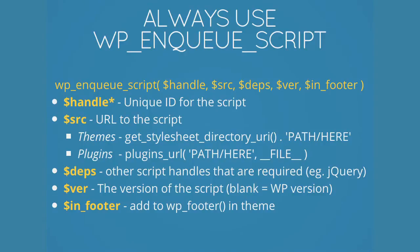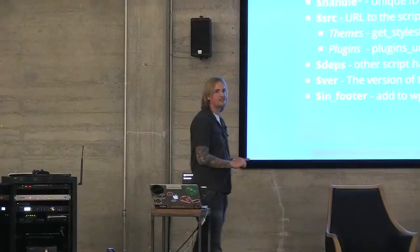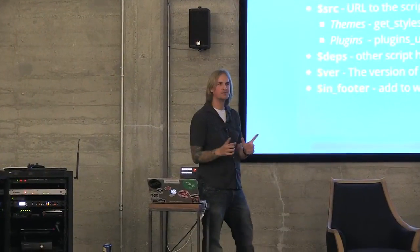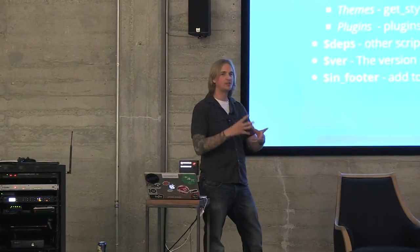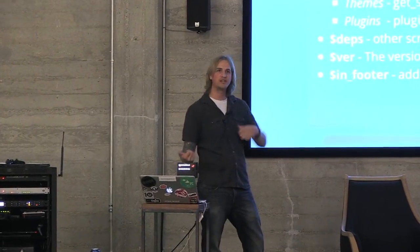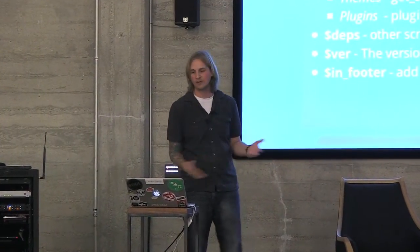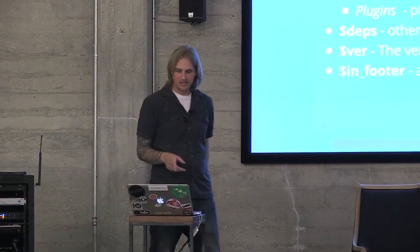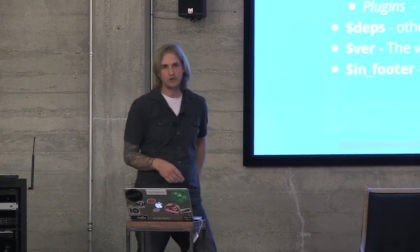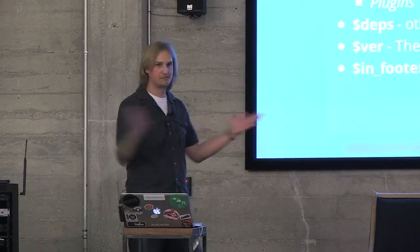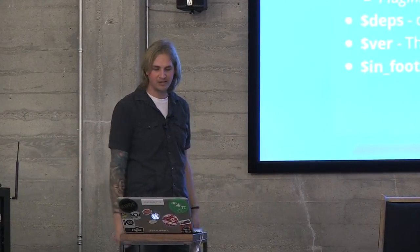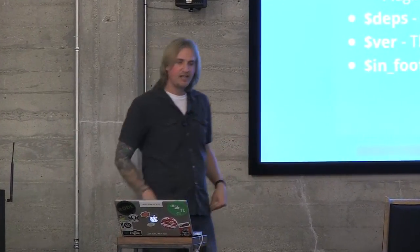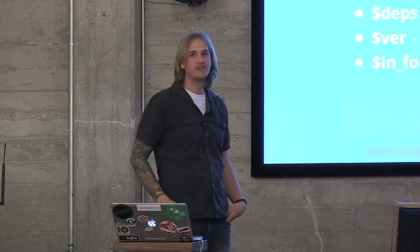The first function is wp_enqueue_script and it takes five parameters. The first is the handle, which is a unique identifier for that script specifically. You can use that ID within WordPress to say you want to load this script here, or load it there, or remove it. The next is the source attribute, which is the URL to the script — the path that you want to put in.